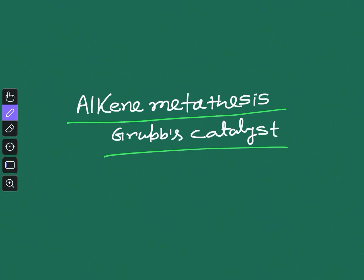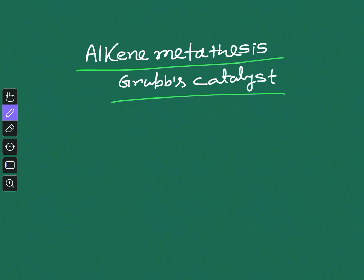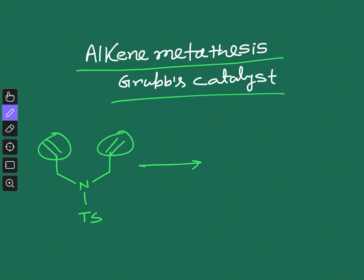This is a very important reaction. A representative example found in many books is a molecule where you have two alkene groups linked together — you can do a ring formation reaction, a ring-closing reaction. This is called ring-closing metathesis, and it is done by Grubbs catalyst.